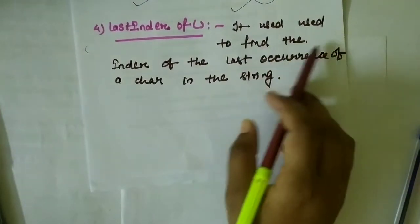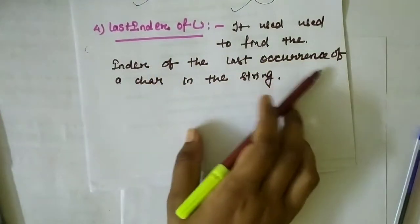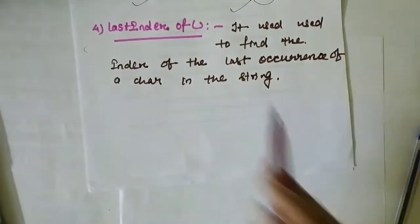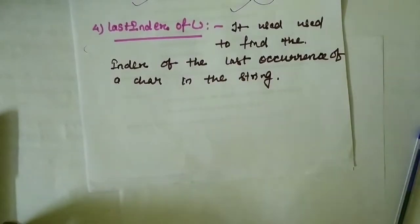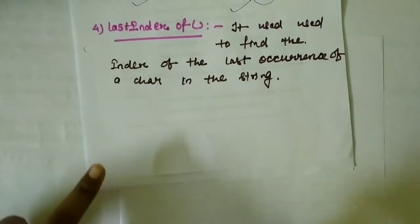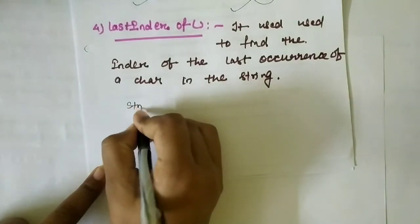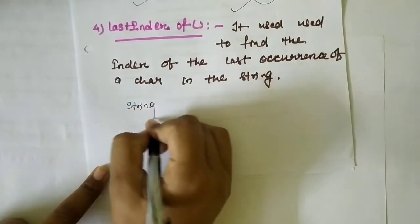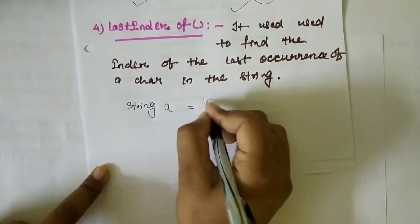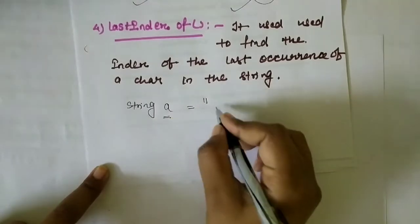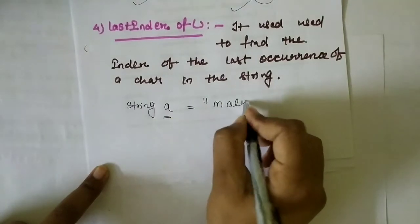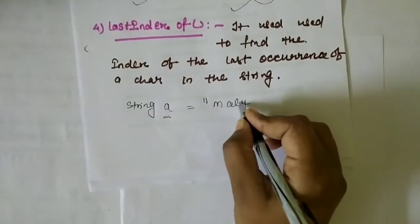It is used to find the index of the last occurrence of a character in the string. Let's understand this better with an example. We take a String variable 'a' and store a value in it.